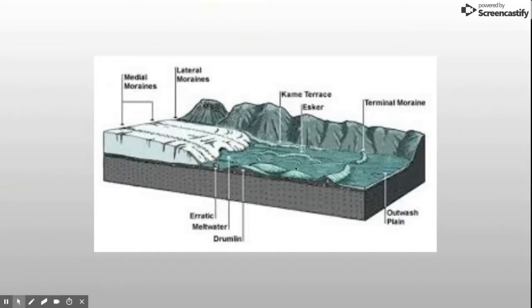The Kettle Moraine School District was named from the result of glaciers pressing down on an area that eventually formed curved ridges called moraines. Kettles are where pieces of the glacier were so heavy they made little craters, which are now usually lakes and ponds.